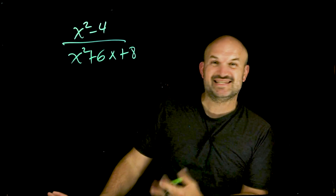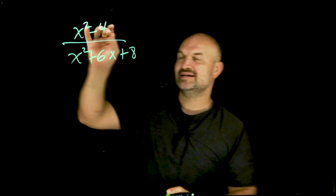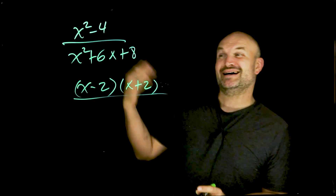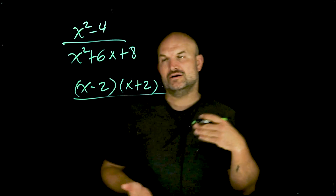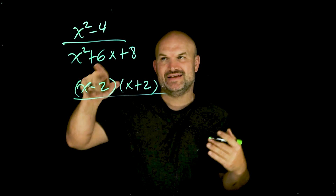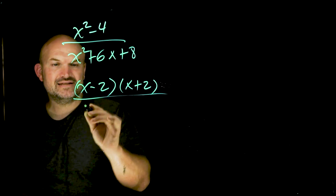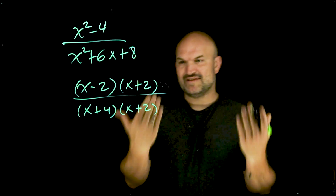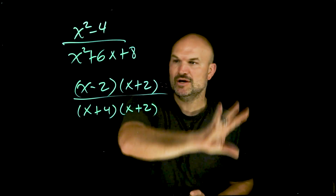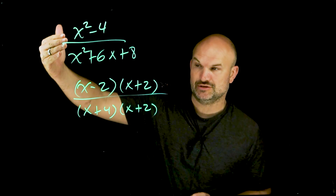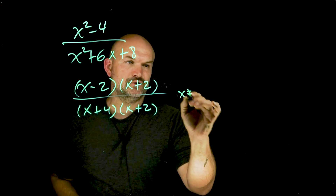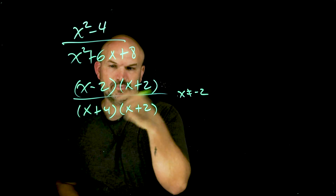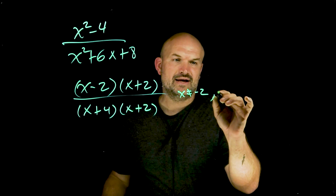On this next example, again the first thing I always want to do is factor. Up top we have a difference of two squares, so I can rewrite that as (X minus 2)(X plus 2). In the denominator, I'm looking for two numbers that multiply to give me eight and add to give me six — that's four and two. Since everything is positive, I get (X plus 4)(X plus 2). It's important to identify the values that make the denominator zero: X cannot equal negative two and X cannot equal negative four.